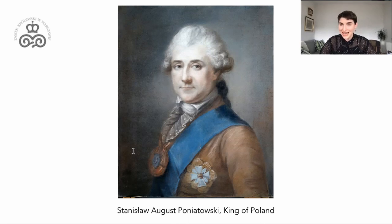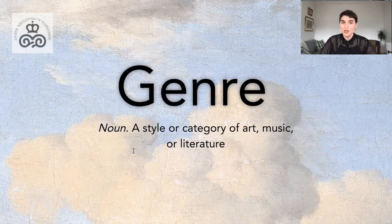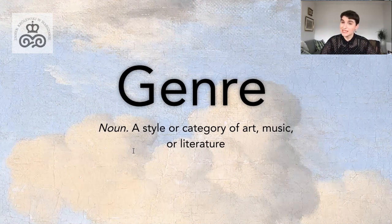My lecture today covers an entirely different topic. I want to explore the concept of genre in Dutch painting. The term genre is used to describe the different types of subject matter present in 17th century Dutch painting — portraiture, landscape, still life are all examples of genre categories. This is such an important topic because it is genre and the diversity of subjects in Dutch painting that makes it so unique and truly sets it apart from Italian, French or Spanish painting in the same period.